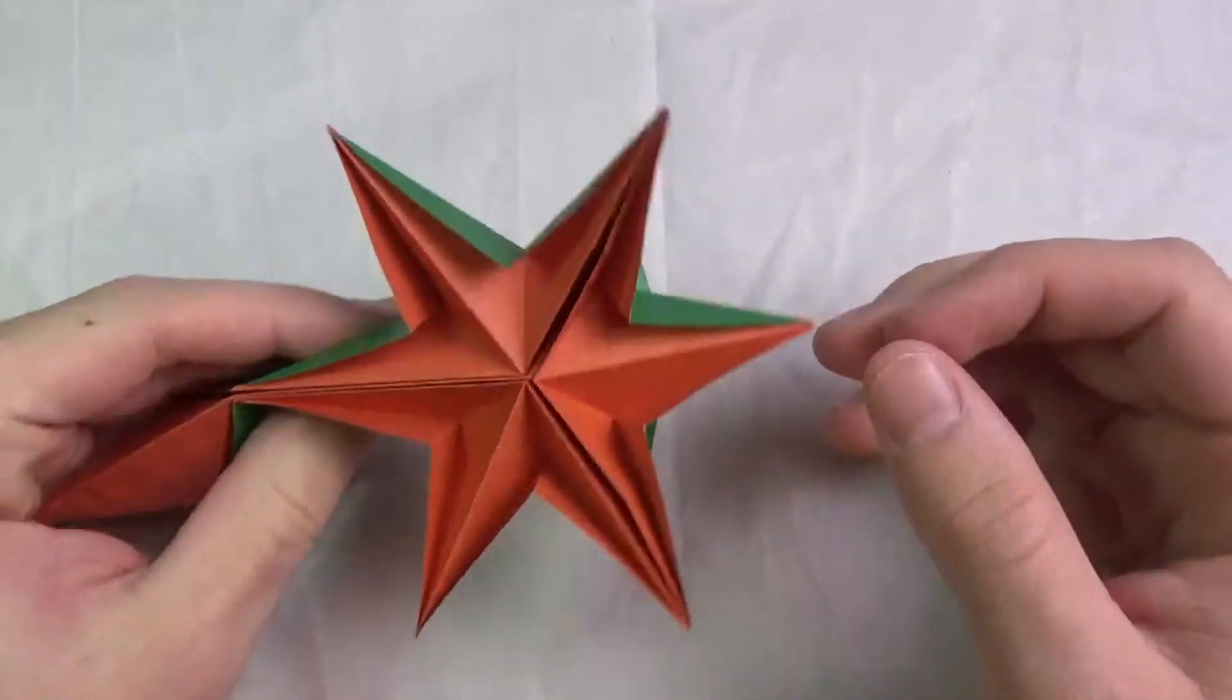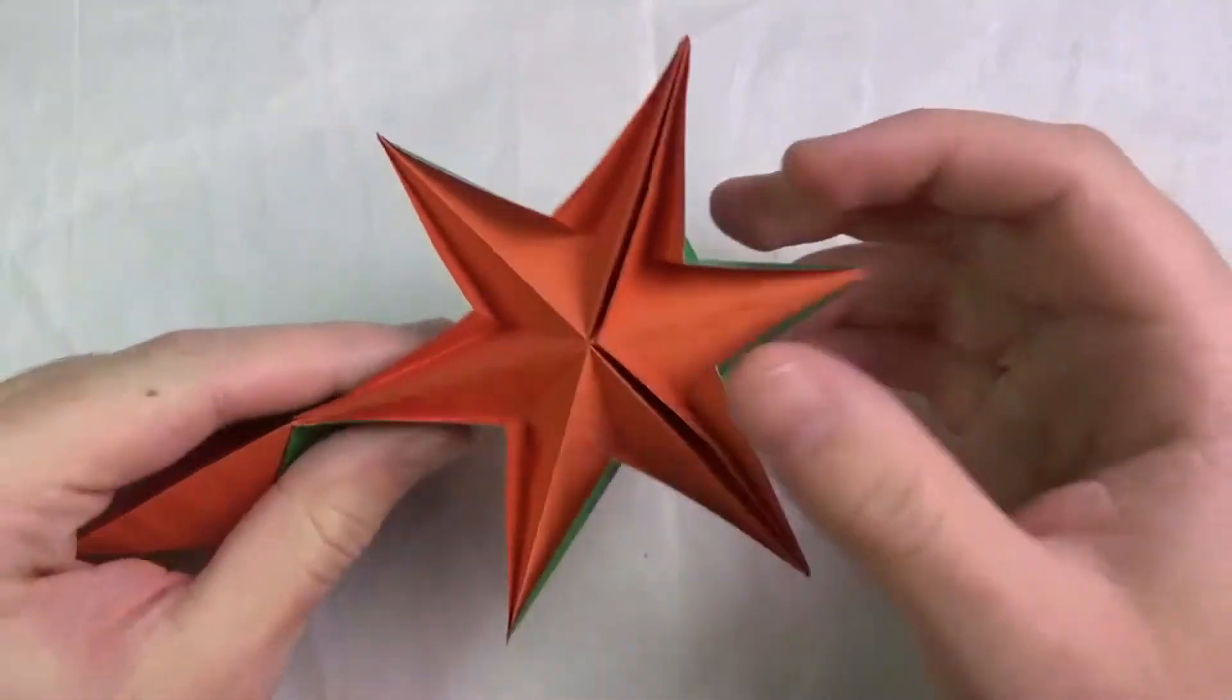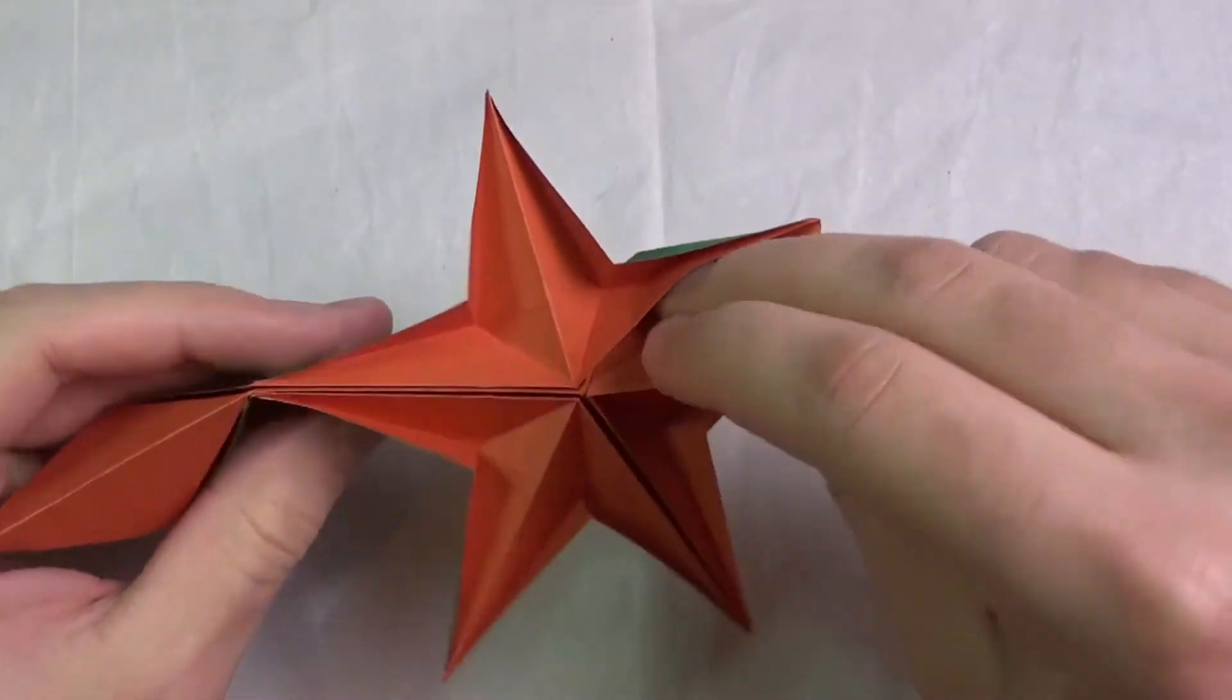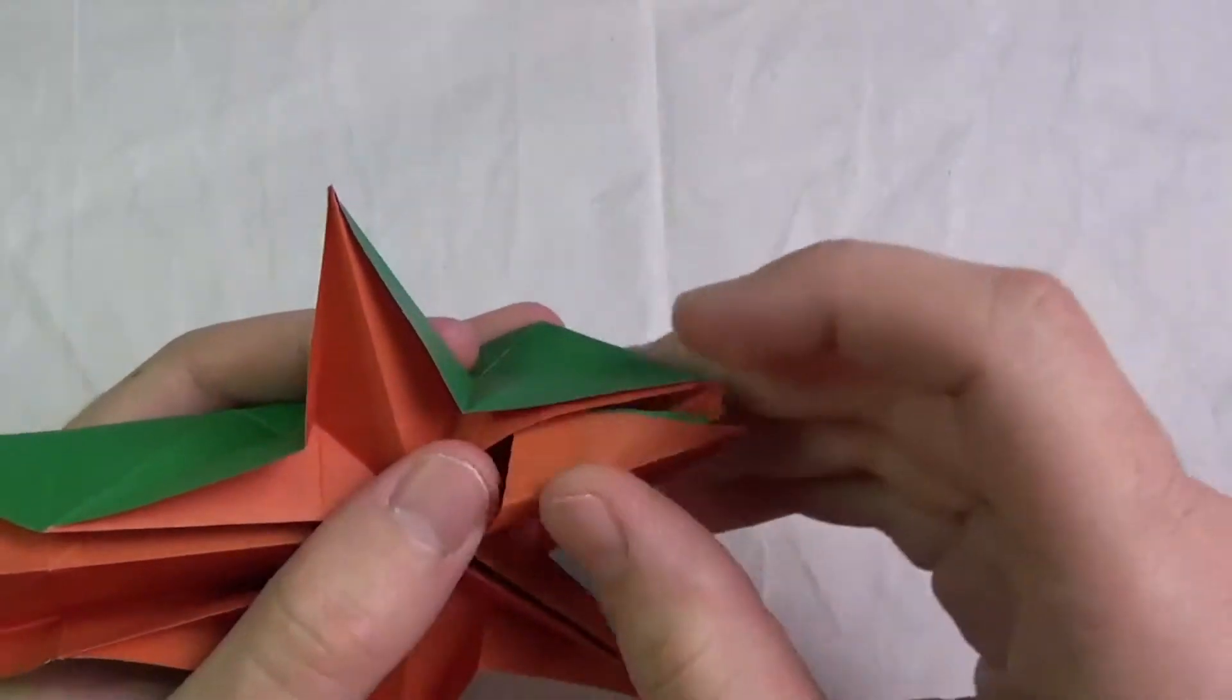And what's also cool about it is that you can even turn it into a five-pointed star. So you take this, insert the flap into the pocket.